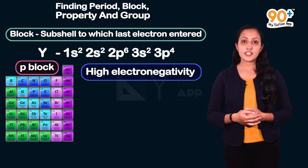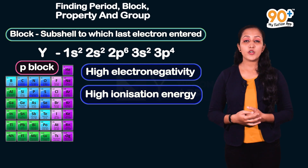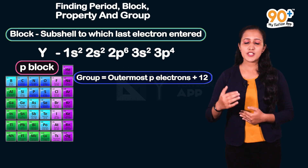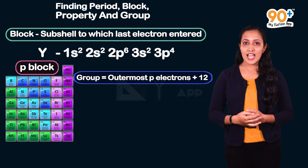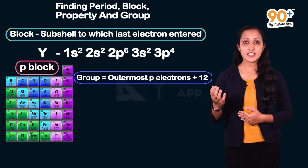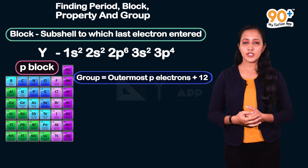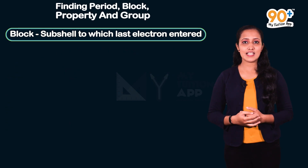For p-block elements, the group number is found by adding 12 to the number of electrons in the outermost p subshell. For element Y, the outermost 3p subshell has 4 electrons, so the group number is 4 + 12 = 16. P-block elements include non-metals, metalloids, and inert gases, and have higher electronegativity and ionization energy.